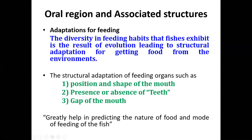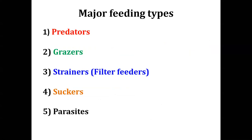Before talking about the structure, we will first see what are the different feeding types in fishes. Fishes are a very diverse group of lower vertebrates and any type of variation you talk about exists in fish. There are five major feeding types in fishes: predators, grazers, strainers, suckers, and parasites. We will see each one with some representative examples.